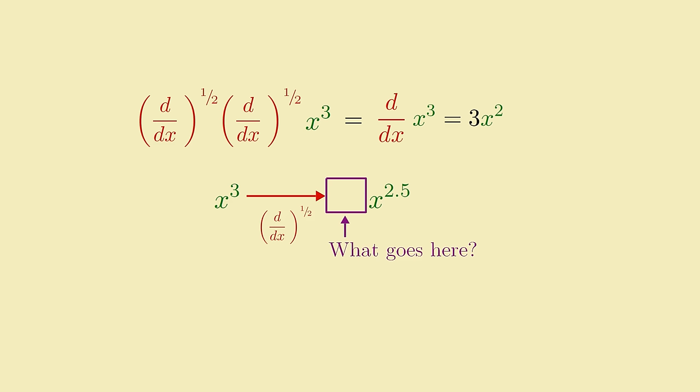I mean, the exponent of 2.5 still sounds about right, but evidently we need to include some kind of coefficient. But what coefficient? It's actually a pretty tricky problem. You'd think it'd be something simple, like maybe the square root of the exponent, but that wouldn't quite work, because the exponent changes after applying the first half-derivative. Go ahead and take a quick swing at this problem. It's actually quite a fun little exercise.